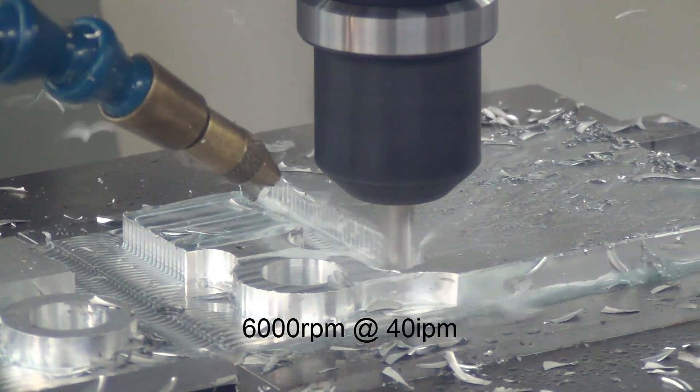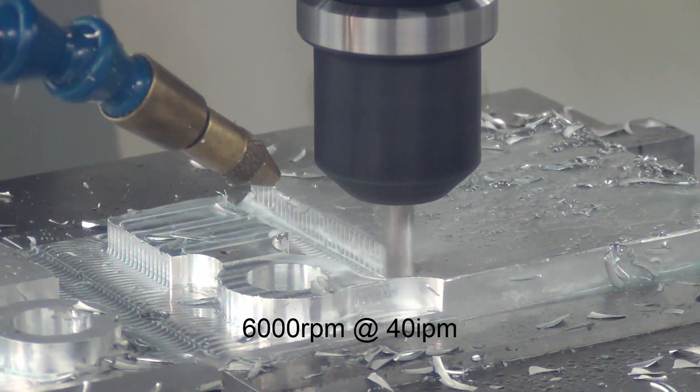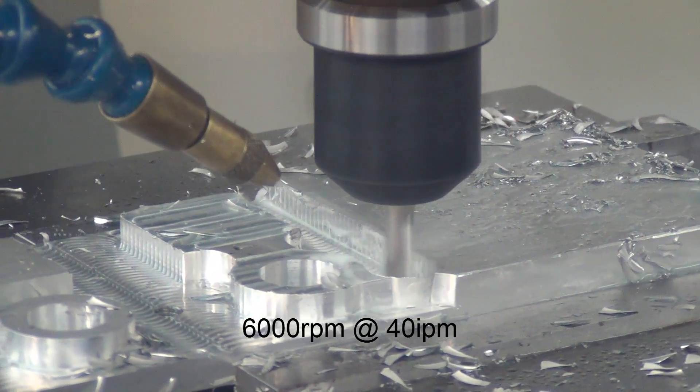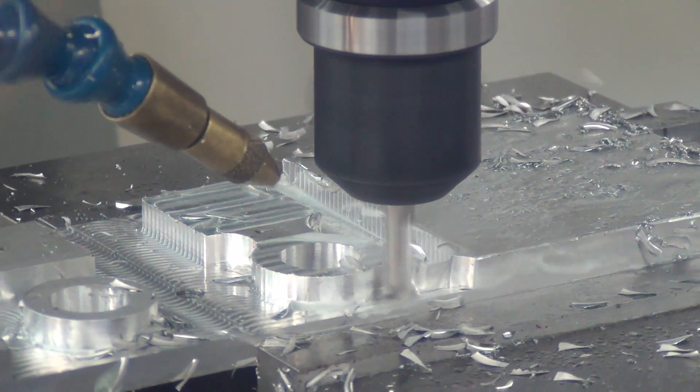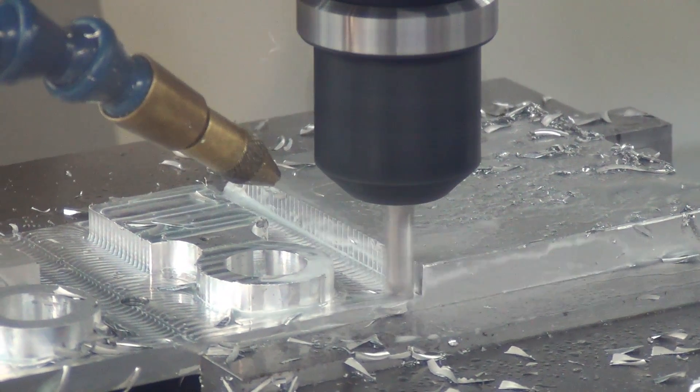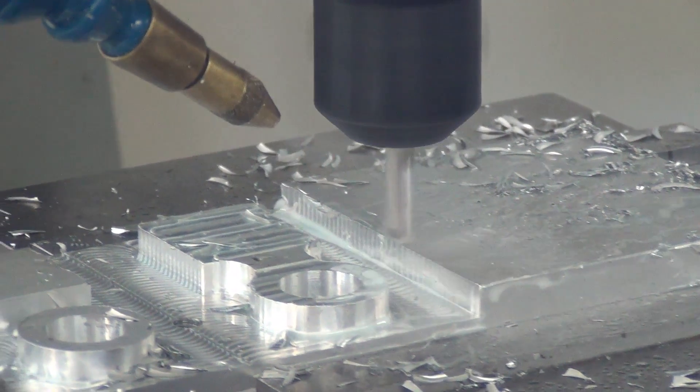And now it's 6,000 RPM, 40 inches per minute, and the spindle loads barely even go on to 18%.